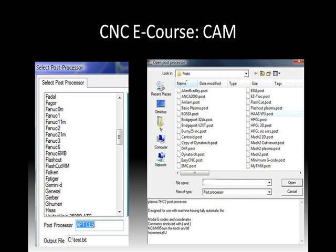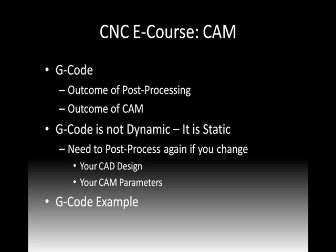You'll see a number of CNC controllers here. The ones on the right are plasma cutter post-processors, and the ones on the left are milling machine post-processors. Once we post-process, we have a file filled with G-code, which is the language of CNC. It's what a CNC machine runs on, and G-code is the outcome of both the post-processing and the entire CAM process. It's what we're left with when we're done.